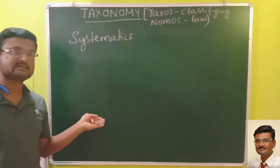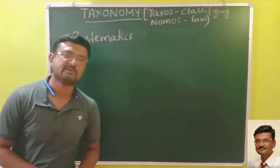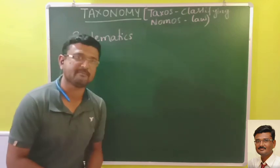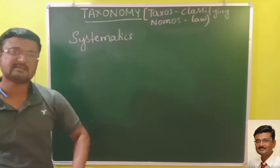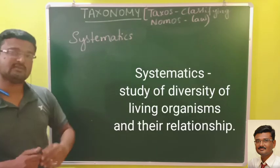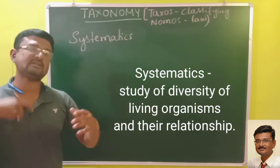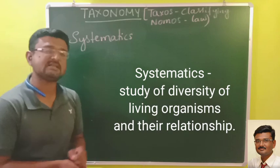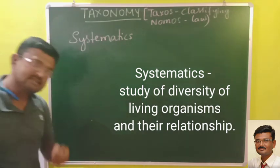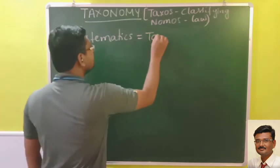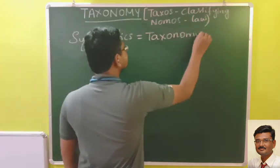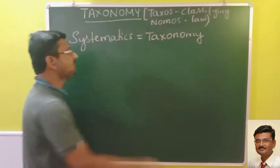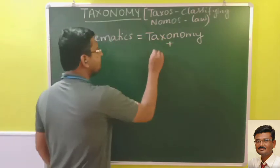As taxonomy became advanced, new branches came into existence, among them systematics. Remember, systematics and taxonomy are different terms. Taxonomy covers classification, nomenclature, identification, and description. Systematics is a branch of science which deals with the study of diversity of organisms and the relationships among those organisms. In simple terms, systematics equals taxonomy plus developing the relationships among organisms.